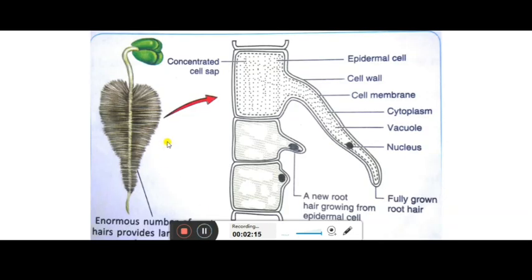Here in the picture you can see the structure of a root cell as given in your book. It is a single cell structure in which the nucleus is there, this is the vacuole which holds the liquid part, and the cytoplasm is there. The cell membrane surrounding it is a semi-permeable membrane — it allows solvent particles to move inside but does not allow them to move outside. This is the cell wall and this is the epidermal cell with concentrated cell sap inside the vacuole.